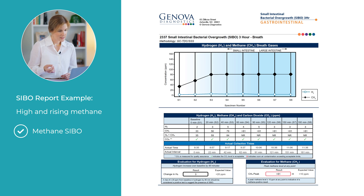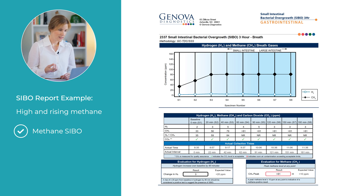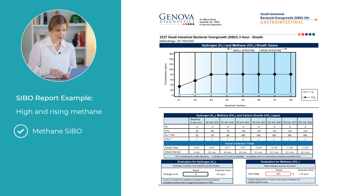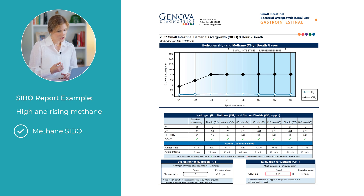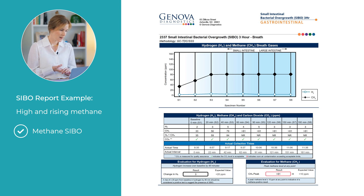Second is methane SIBO, or intestinal methanogen overgrowth. A baseline methane level of 10 parts per million or higher is a strong indicator of methane-dominant SIBO, and a high baseline suggests a significant presence of methane-producing archaea. You can see that this client has a methane level of 33 from baseline and it rises above the limits of the lab, which is 81 parts per million, from 60 minutes onwards. This pattern is often associated with constipation, bloating, gas, and slower intestinal transit time.